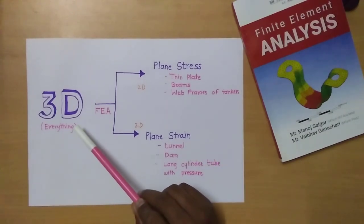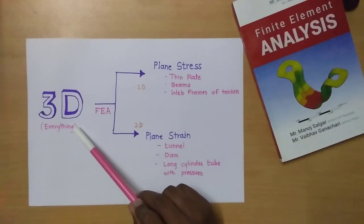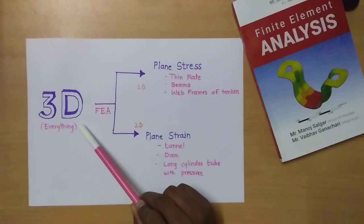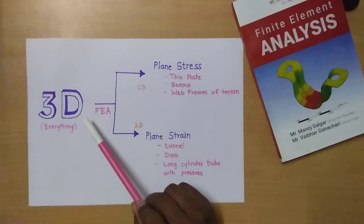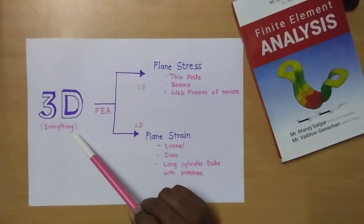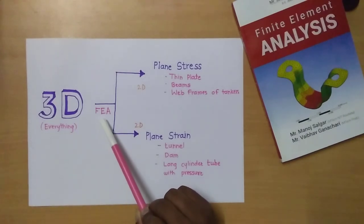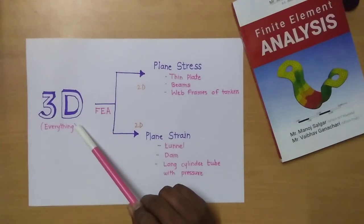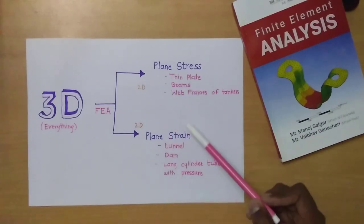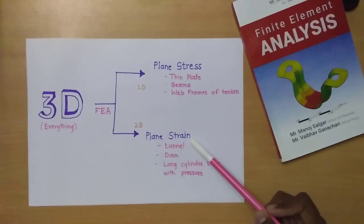First of all, what is meant by 3D? It has all X, Y, and Z dimensions which we have to consider. Every object in the world is a 3D object which is to be analyzed. But while doing a finite element analysis, we convert this 3D object into a 2D object by using plane stress and plane strain conditions.